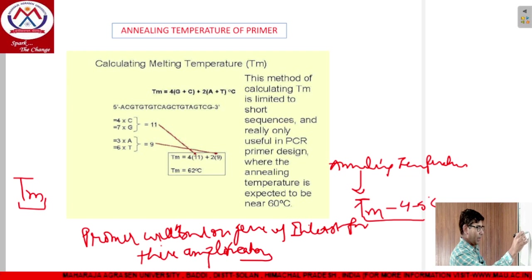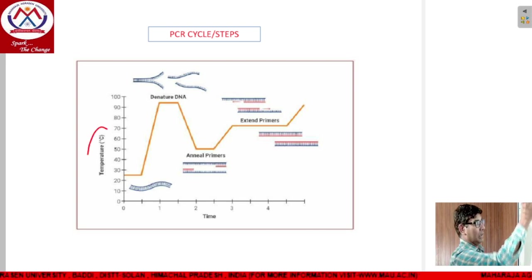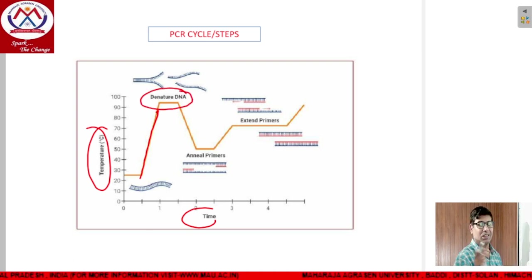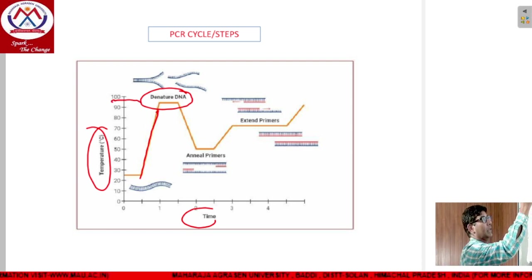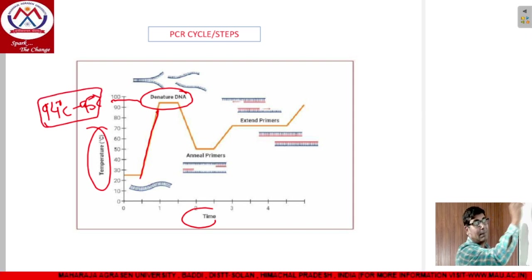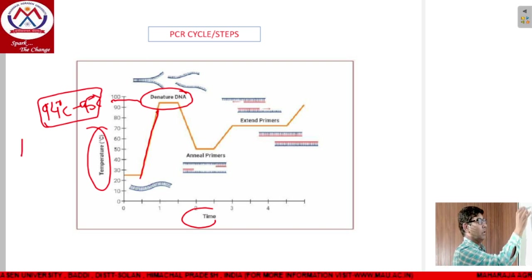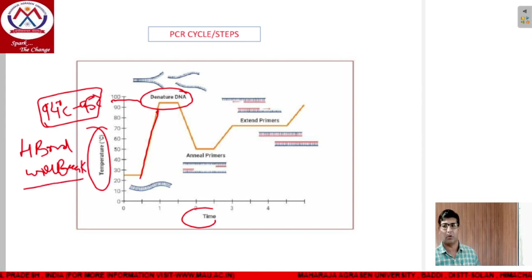Now we will discuss the cyclic events of the PCR reaction. The first step is denaturation of the double-stranded DNA into single-stranded DNA at high temperature — approximately 94 to 95 degrees centigrade. At that temperature, 100 percent of the hydrogen bonds will break, and the double-stranded DNA converts into single-stranded DNA for the binding of the primer.